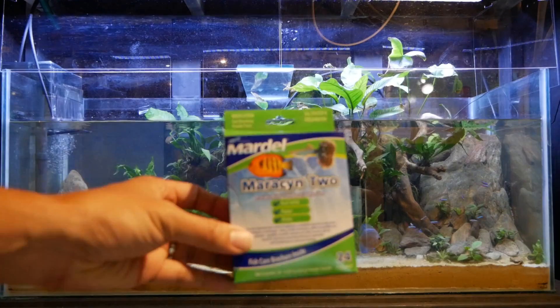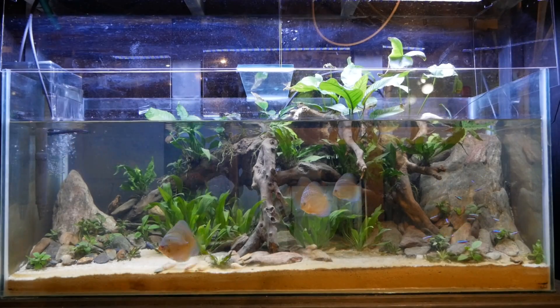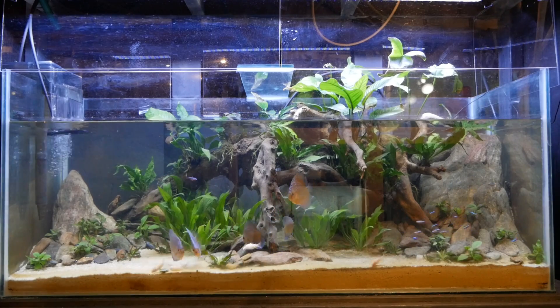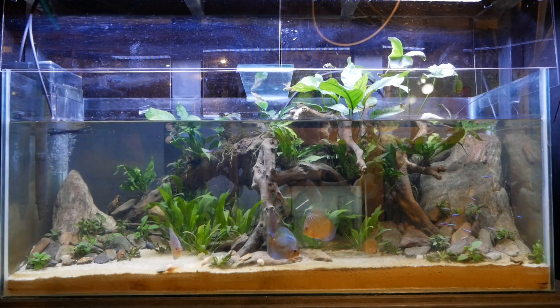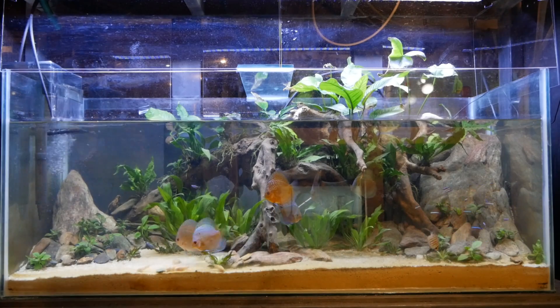On the 75 gallon, I treated with an antibiotic called Mericent 2 to kill any leftover infections. The Mericent 2 treats for gram negative bacteria. And the bacteria in your biomedia, the beneficial bacteria, are also gram negative. So we expect that some of that bacteria will die off during this treatment.